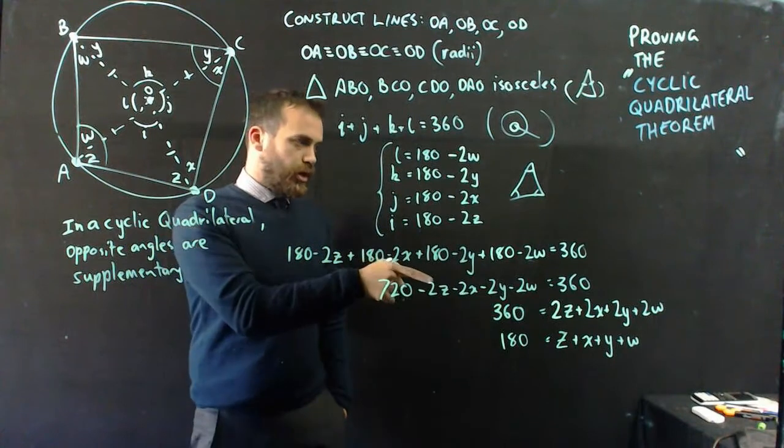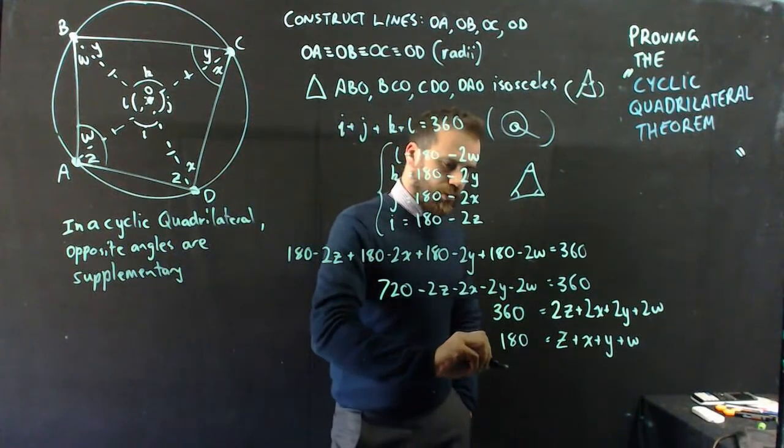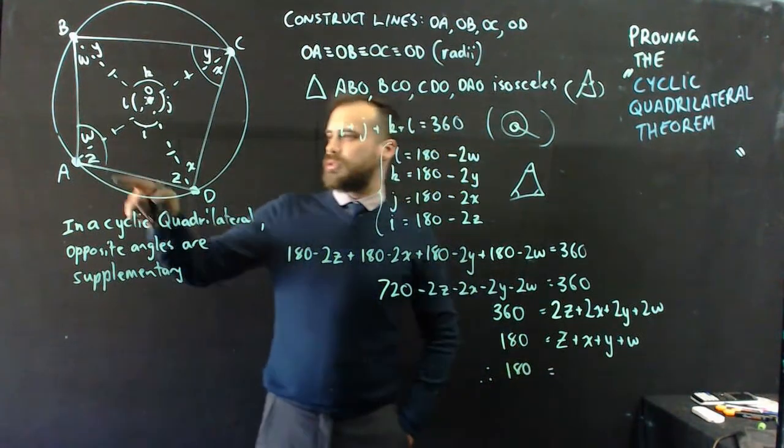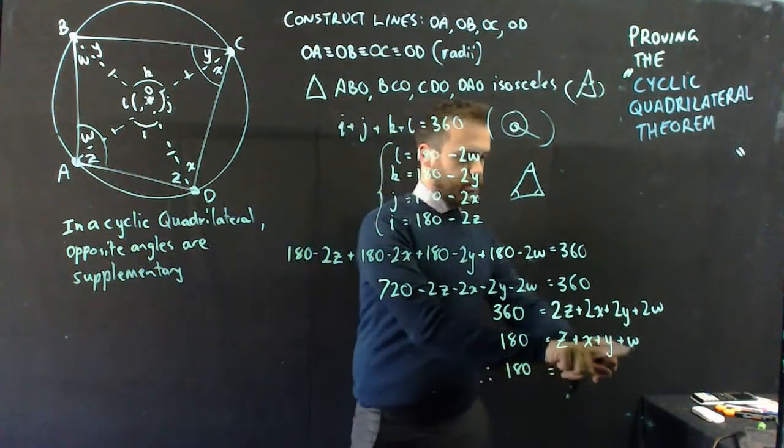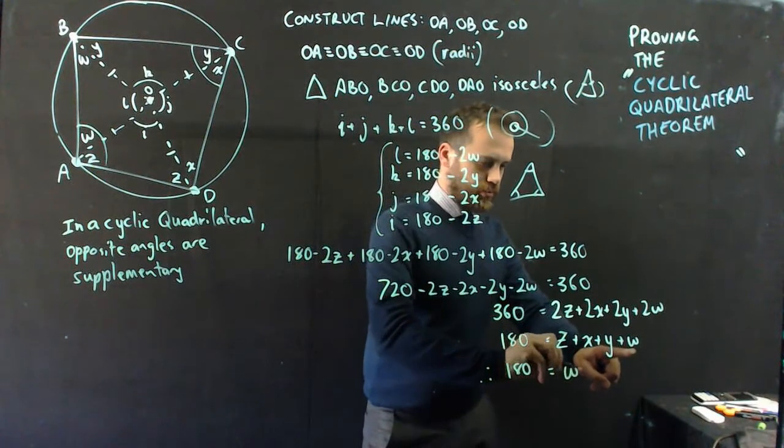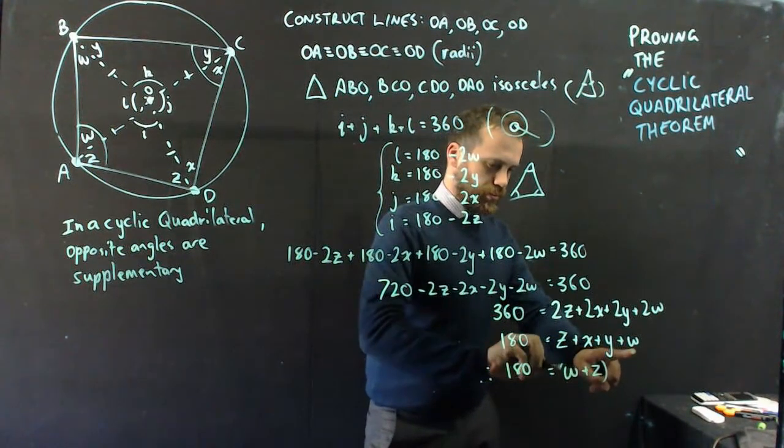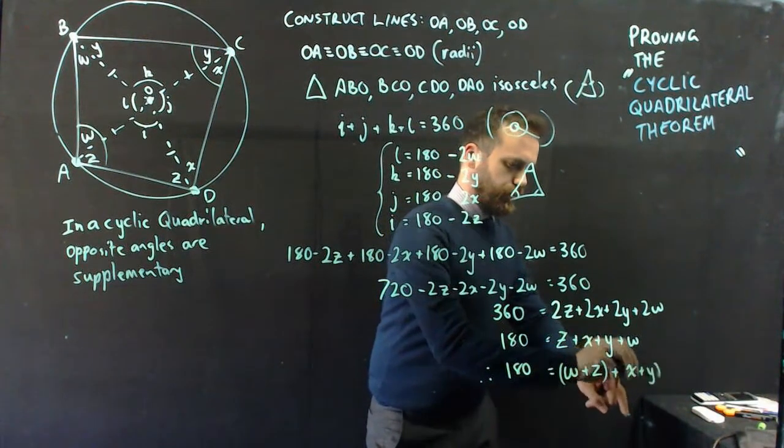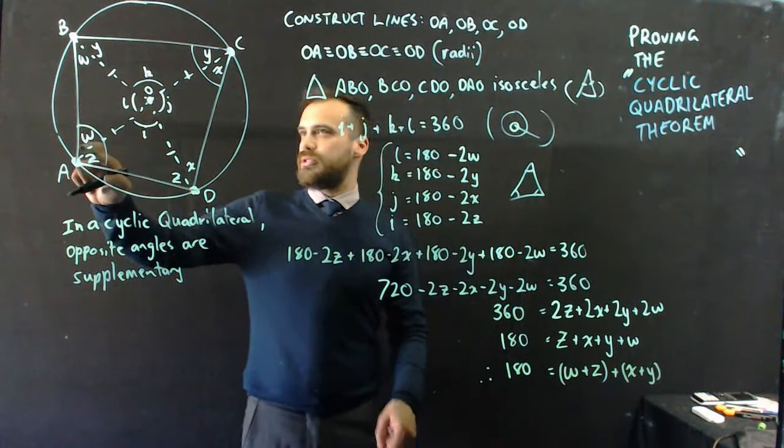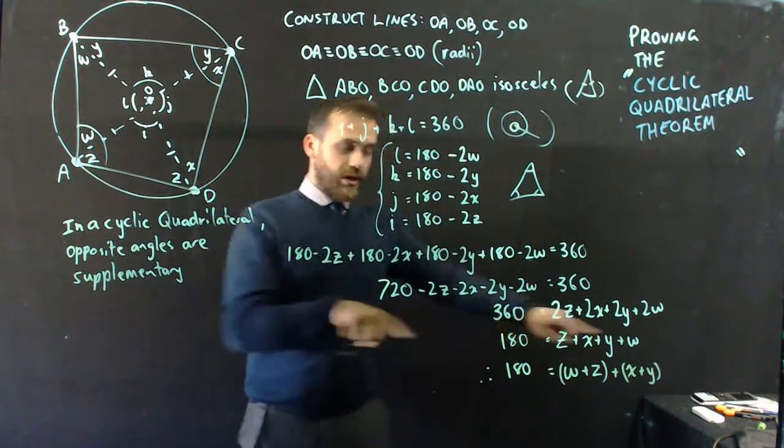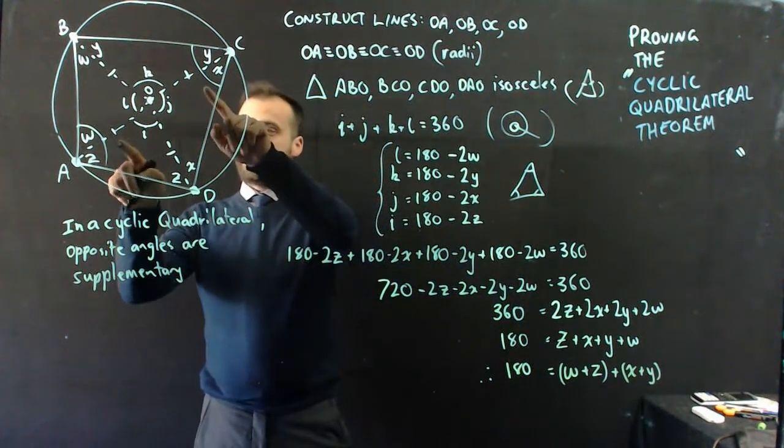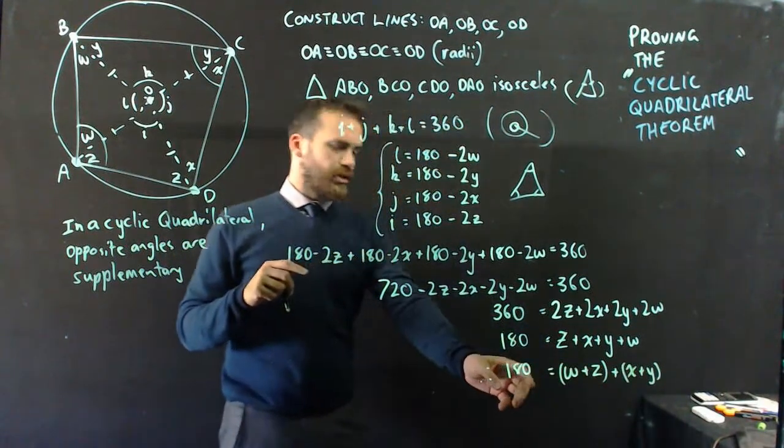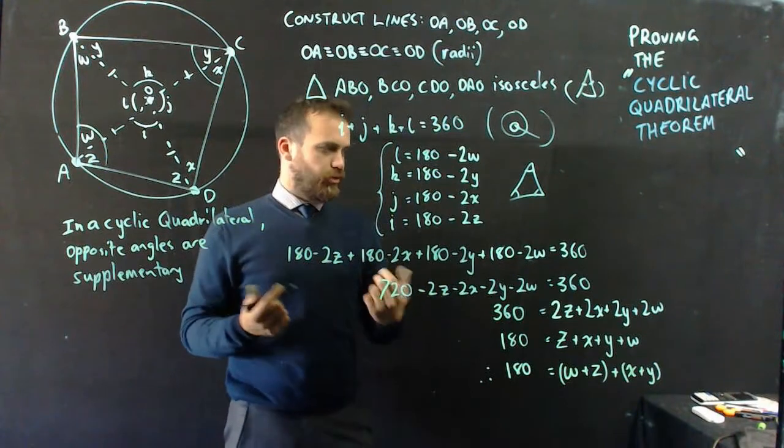So, I think I've already proven it. Therefore, 180 equals WZ plus X plus Y. WZ plus X plus Y. They are opposite angles. They add together to make 180. Therefore, they are supplementary.